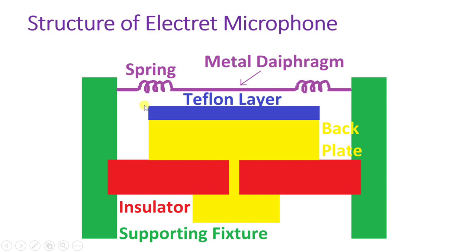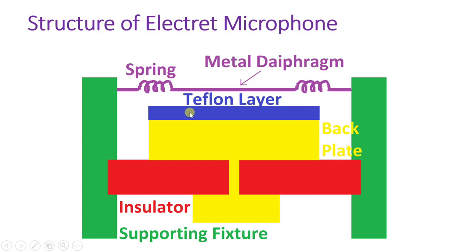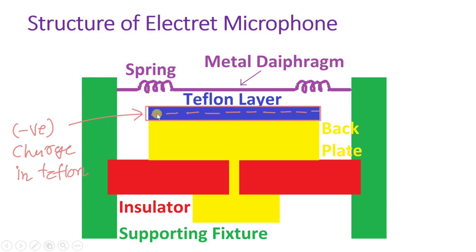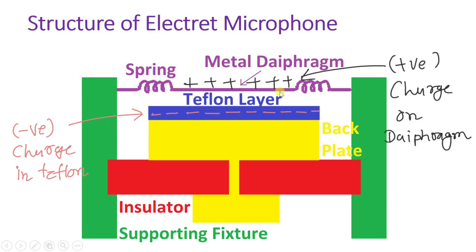The structure is almost similar to the capacitor microphone. There is a metal diaphragm connected with a spring. There is a back plate, but along with the back plate there is a Teflon material. This Teflon material has a built-in negative charge. Because the Teflon material has a negative built-in charge, the metal diaphragm will have a positive charge. This negative and positive charge will generate a voltage.